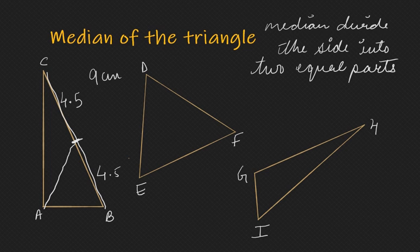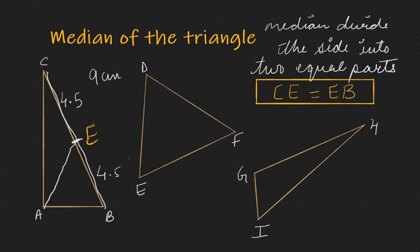Okay, so here if we name it as CE, so CE becomes equal to EB. What is the role of median? Median divides the line segment into two equal parts, the line segment opposite to the vertex into two equal parts.